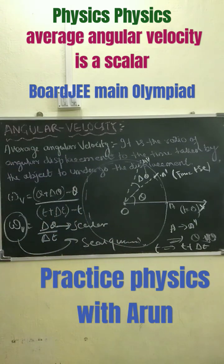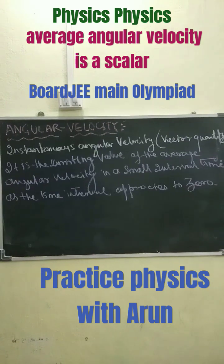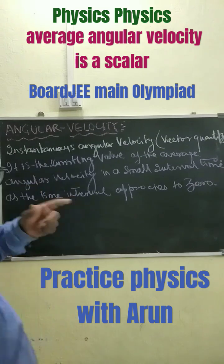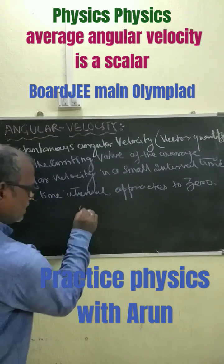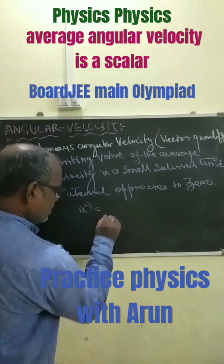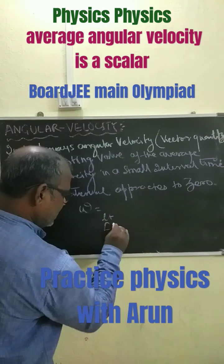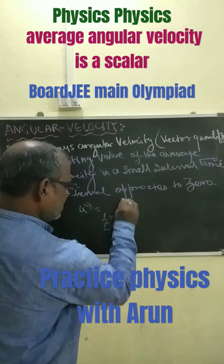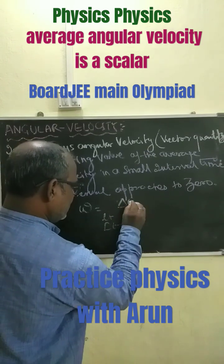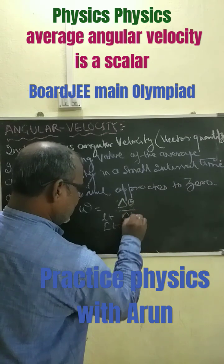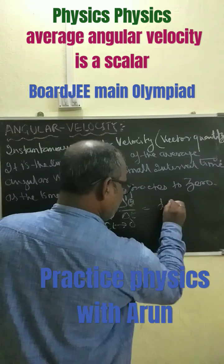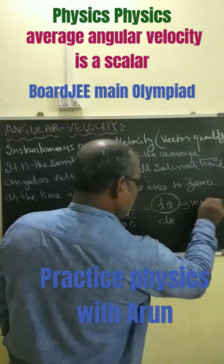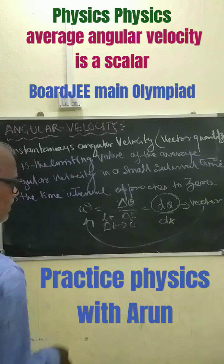Now, the instantaneous angular velocity is a vector quantity. When the time interval approaches 0, we write omega equals the limit as delta-t tends to 0 of delta-theta by delta-t, which equals d-theta by dt. Since this is a vector quantity, omega is therefore also a vector quantity.